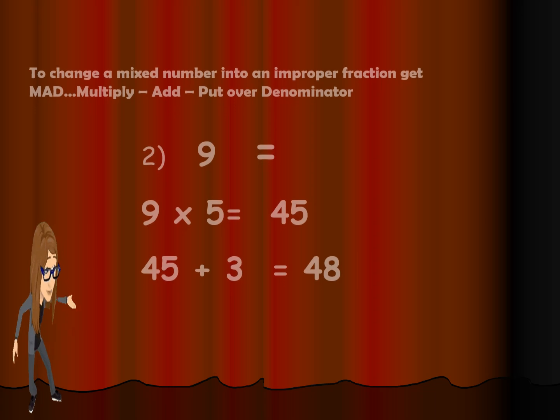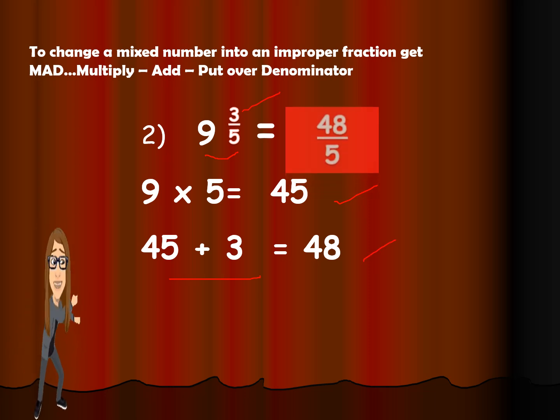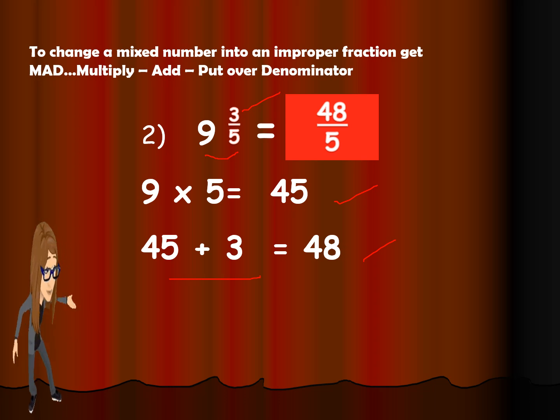Now, let's go to number 2. So 9 and 3 fifths. Let us multiply. 9 times 5 is 45. Then 45 plus 3 is the numerator, that is 48. So the answer is 48 over 5.